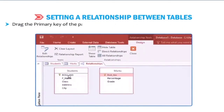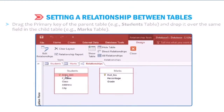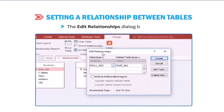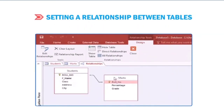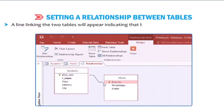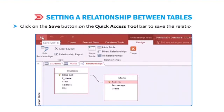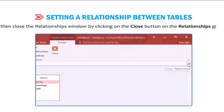Drag the primary key of the parent table — for example, the Students table — and drop it over the same field in the child table, for example the Marks table. In our example, role number is the primary key. The Edit Relationships dialog box appears. Click the Create button. Access creates the relationship between the tables, and a line linking the two tables will appear indicating they have been linked on the basis of that field. Click Save on the Quick Access Toolbar to save the relationship, then close the Relationships window.